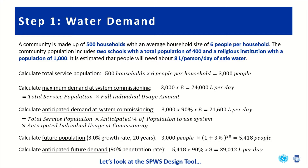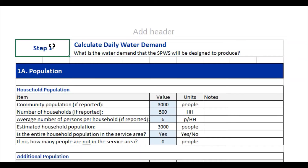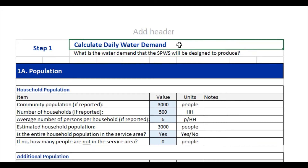Next, let's look at how this information appears in the solar-powered water system design tool. Here we are in step one of the solar-powered water system design tool, where we will be calculating daily water demand.